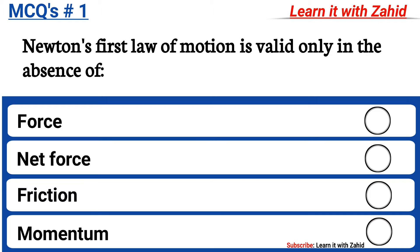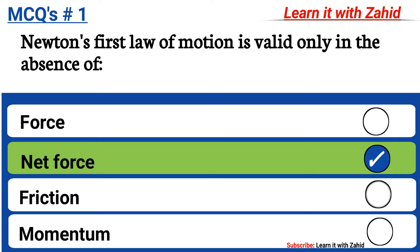Newton's first law of motion is valid only in the absence of: option A force, option B net force, option C friction, option D momentum. The correct answer is option B, net force.